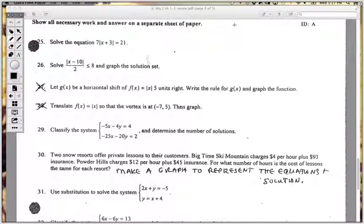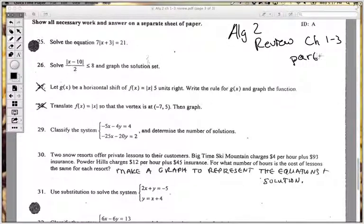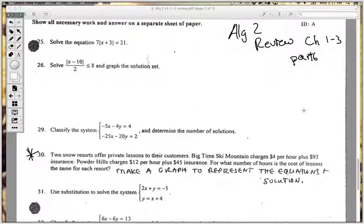Okay, we are in this Algebra 2 review, chapters 1 through 3, and this is part 6. It looks like we're going to have 7 parts to this whole series. We're going to get all the way down to number 30, and we're actually going to skip over a couple of these. We're going to cover up 27 and 28, we're not even going to look at those because they're crossed out.